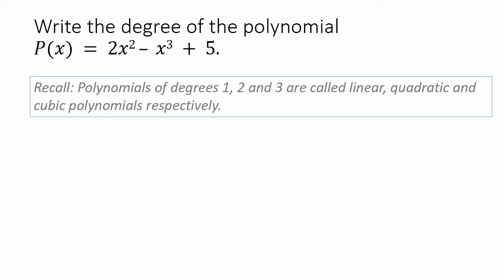This is the polynomial. Let us solve it. P of x equals 2x square minus x cube plus 5 is the polynomial.